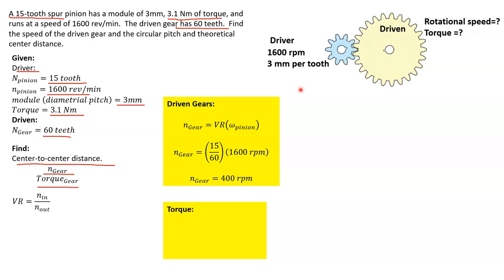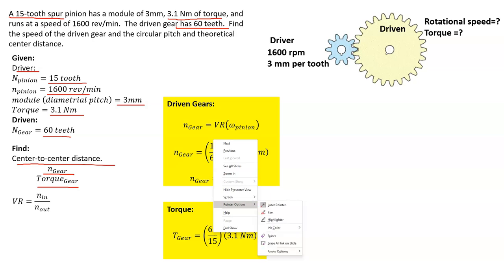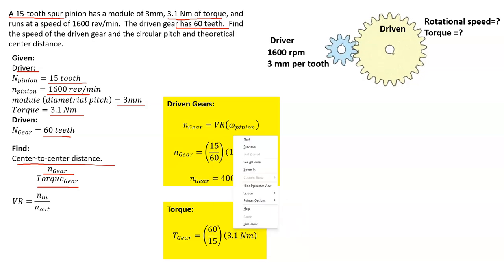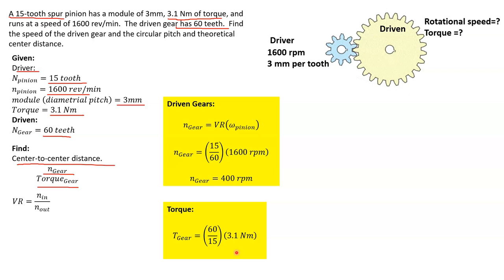So if we use this same velocity ratio that we can count on, and we do have the input torque of 3.1 Newton meters. Using that same velocity ratio, but now we've got to use the inverse of it since the relationship is inverse. You've got 60 over 15 times 3.1 Newton meters.